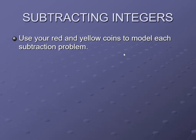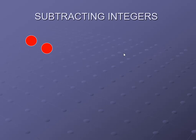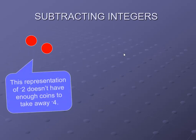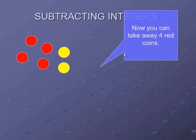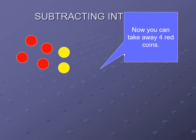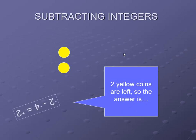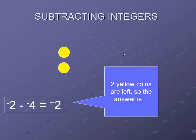Use your red and yellow coins to model this subtraction: minus 2 minus minus 4. Starting with 2 red coins, this does not have enough coins to take away minus 4. So we add two more red coins and two more yellow coins as zero pairs — giving us four red coins, still representing minus 2. Now remove four red coins. Two yellow coins are left, so minus 2 minus minus 4 equals plus 2.